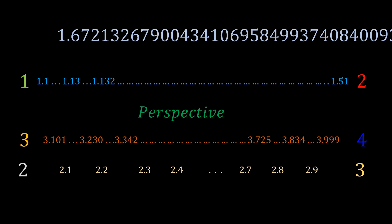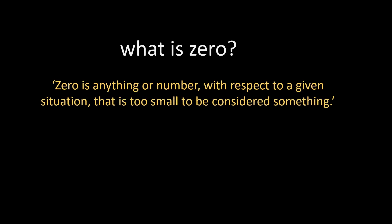Everything that is quantifiable in the universe has a given set of decimal places within which it is defined. And there are no exceptions to this. This directly tells us that the zero you talk about can only exist in that defined situation. But absolute zero cannot exist. As we have seen that we can always add a number after the last number of that considered set of numbers. So, how can we define zero? Zero is anything or number with respect to a given situation that is too small to be considered anything. Absolute zero is an abstract concept and does not exist in reality.